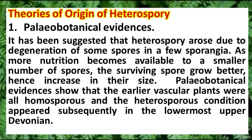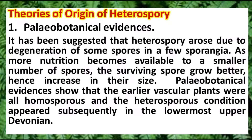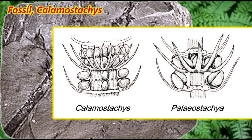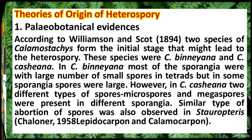Paleobotanical evidence suggests that heterospory arose due to the degeneration of some spores in fused sporangia, as more nutrition became available to a smaller number of spores, causing the surviving spores to grow larger. Paleobotanical evidence shows that earlier vascular plants were all homosporous and heterospory originated during the Devonian period. Some of the fossils which first exhibited heterospory are Calamostachis. According to Williamson and Scott, two species of the genus Calamostachis are said to represent the initial stage of heterospory development.